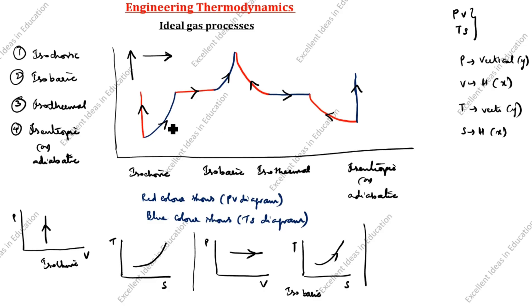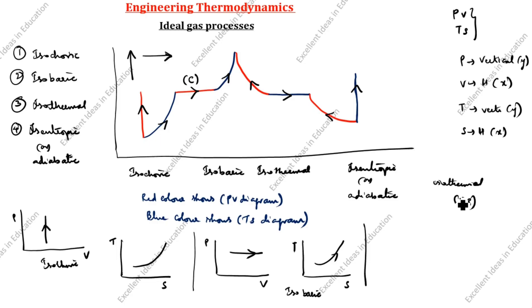P is constant — which process is that? That is isobaric. So isobaric process corresponds to Charles' law. Temperature is constant — which process is that? That is isothermal. For the TS diagram, isothermal gives a straight line, so this corresponds to Boyle's law. Volume is constant — that is isochoric, which corresponds to Gay-Lussac's law.